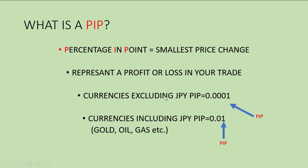Currencies excluding JPY will determine a PIP from the fourth decimal place. Currencies including JPY pairs will determine a PIP from the second decimal place. Also, commodities like gold, oil, gas, and so on — let's talk about the two. Why do we determine our PIP from the fourth decimal place for non-JPY currencies and the second decimal place for JPY pairs?